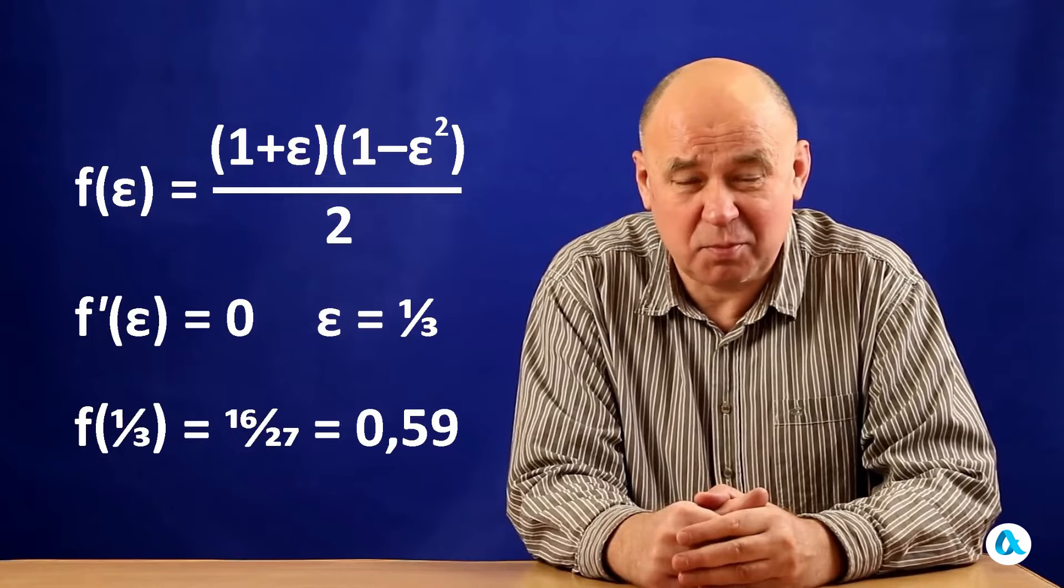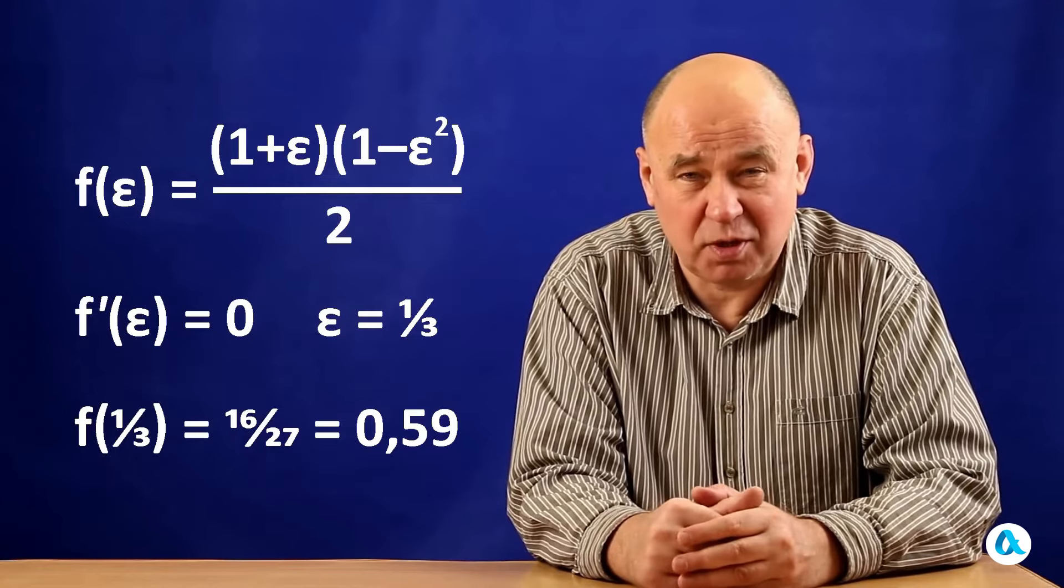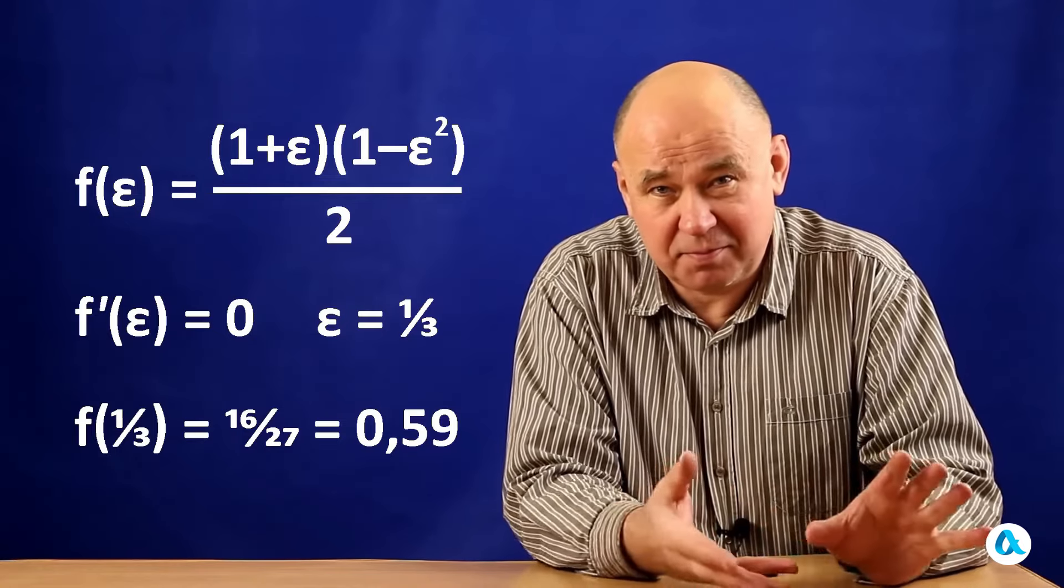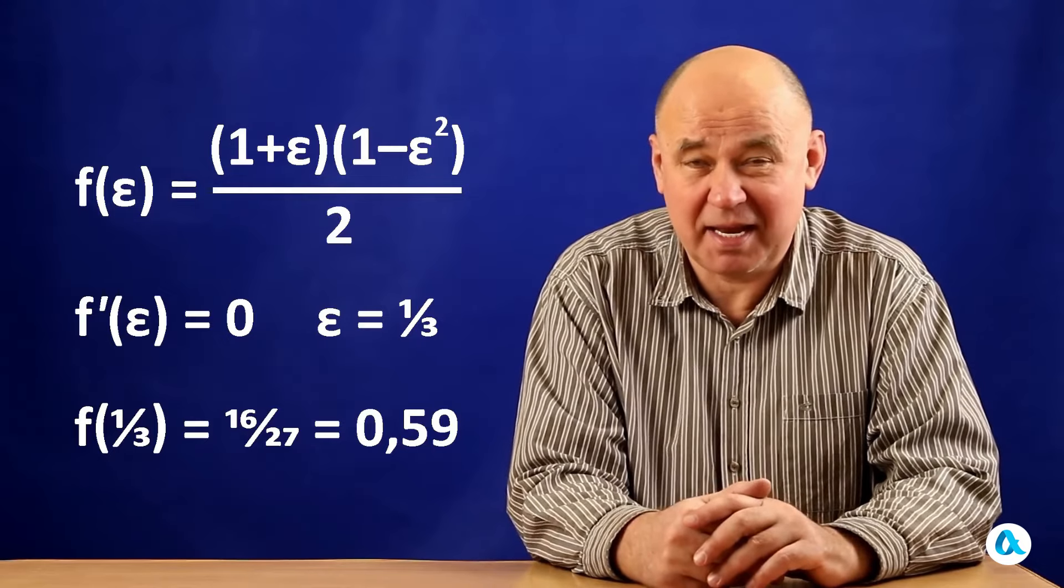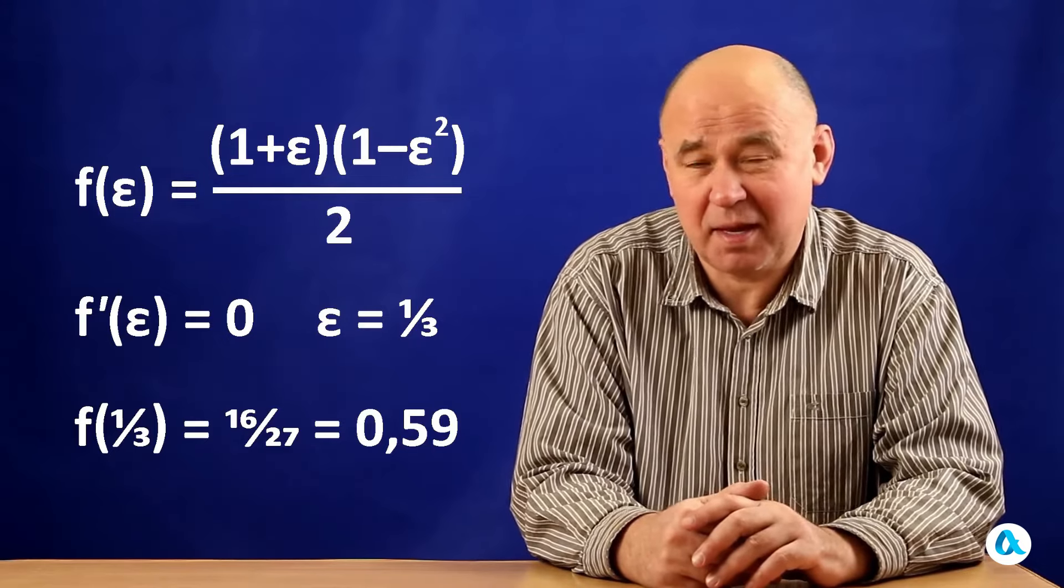Therefore, the maximum possible energy output is 59% of the wind flow energy through the cross-section of our wind turbine. And this is Betz's law, as well as for everyone else who discovered this law.